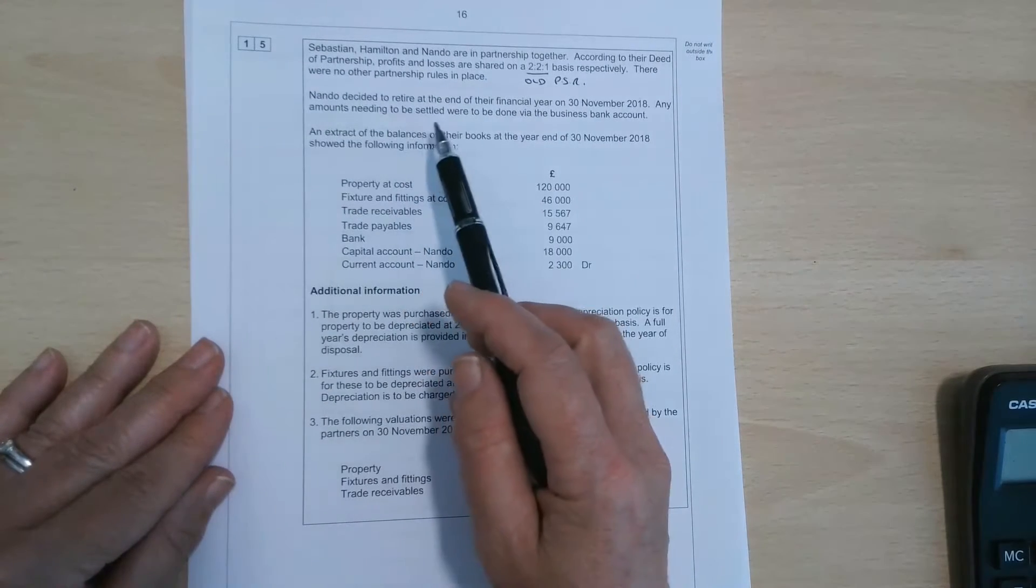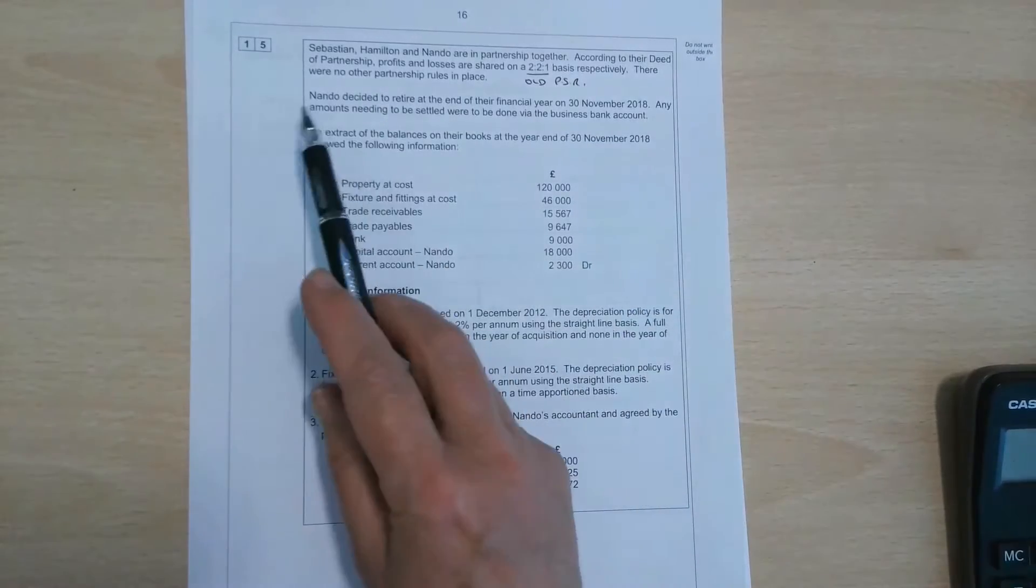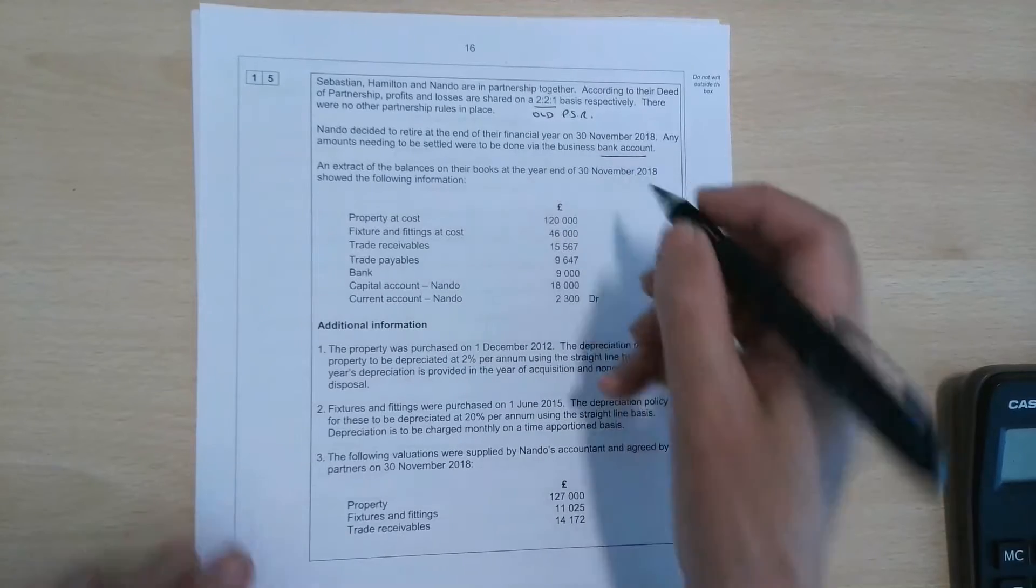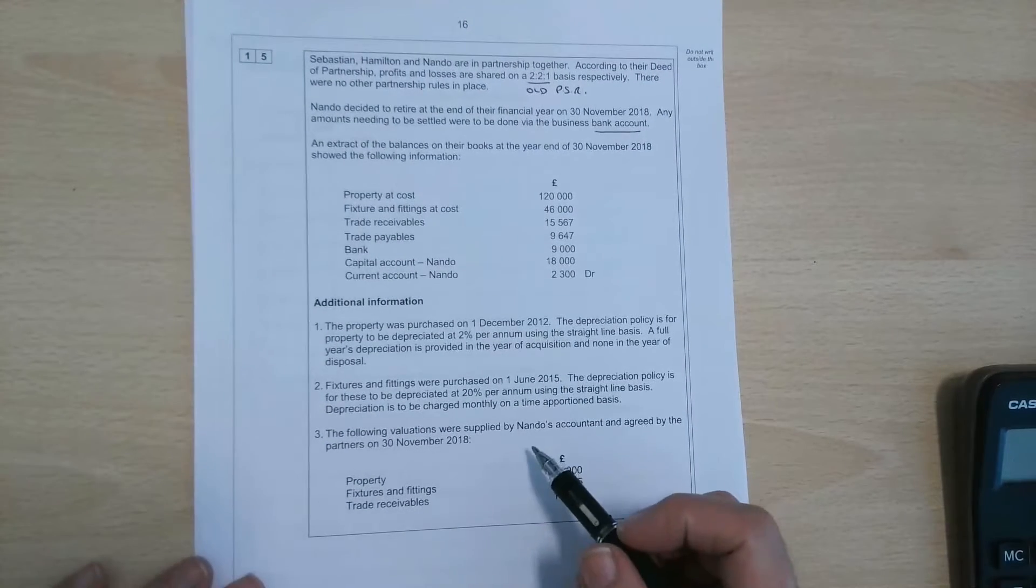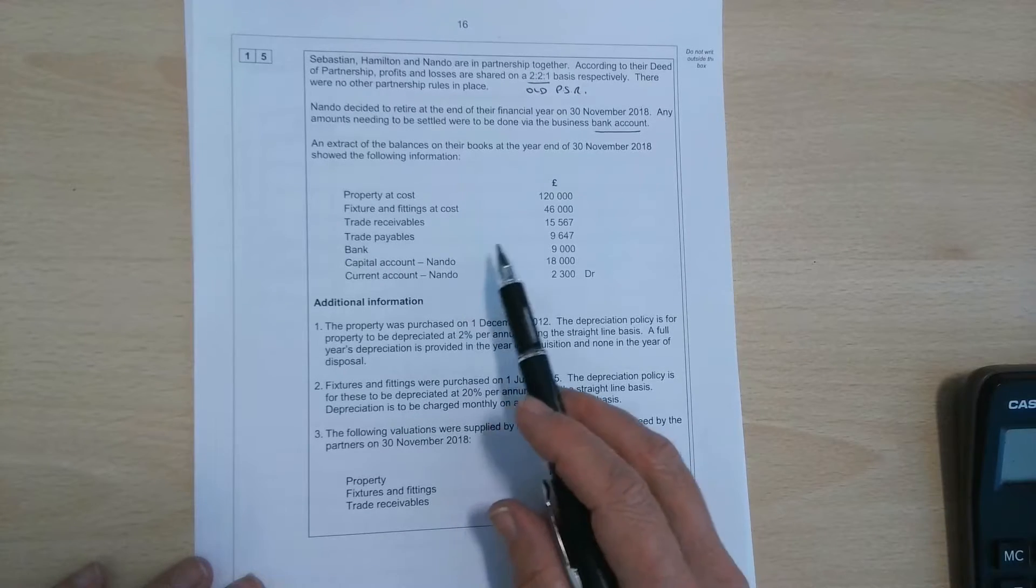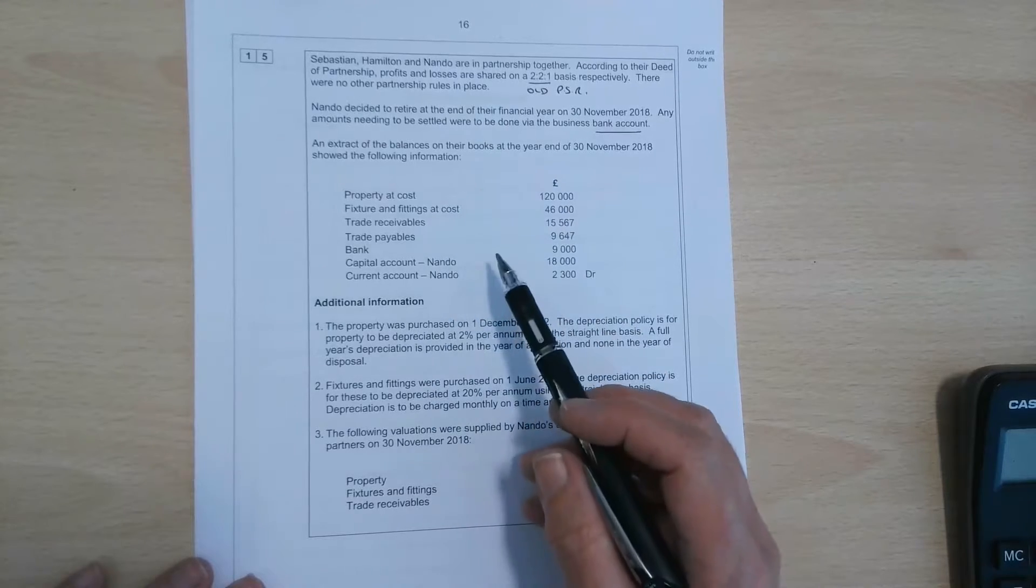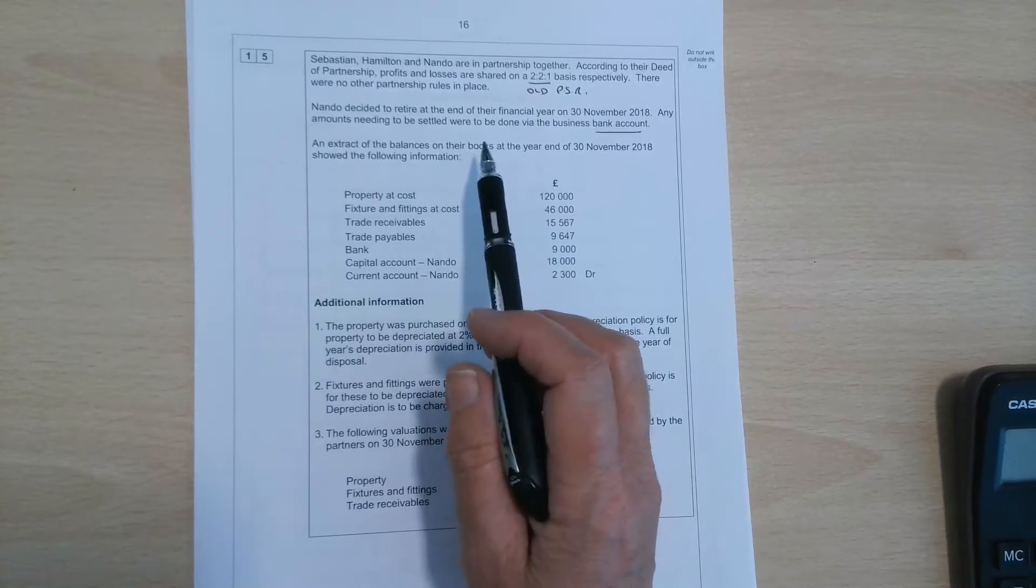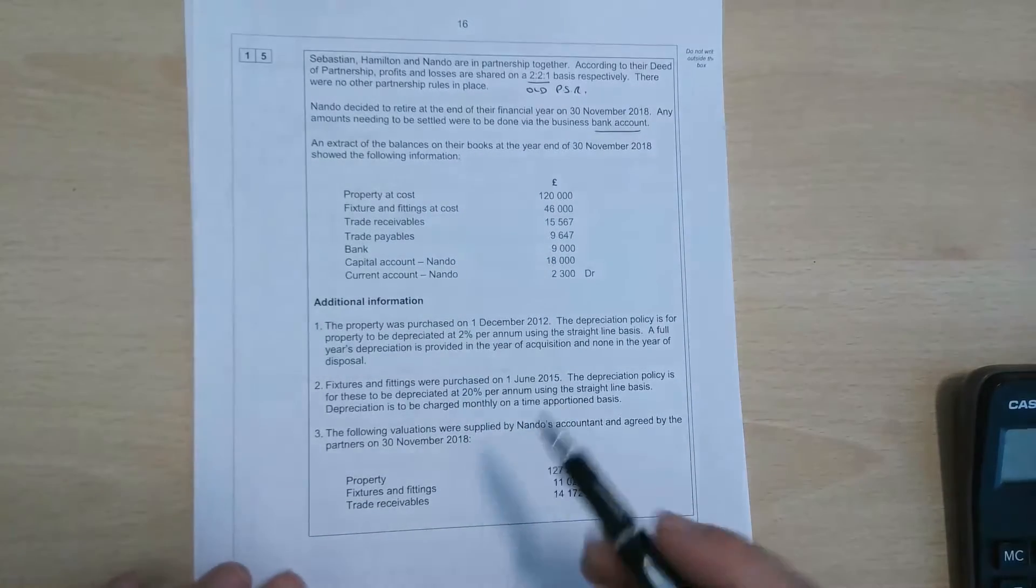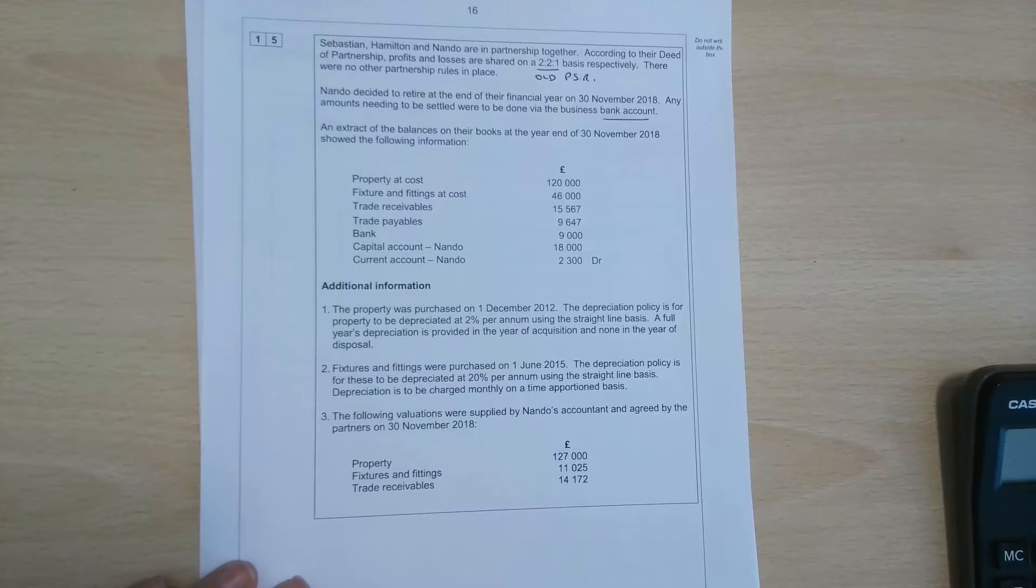So Nando's decided to retire at the end of the financial year on the 30th of November 2018. Any amounts needing to be settled were to be done via the business bank account. So that means if the partnership owes him money at the end, they need to do a transfer, so they credit the bank, debit Nando's capital account. Or if he were to owe them money, we would be debiting the bank and crediting his capital account. A reminder there that if a partner retires, we need to remove all traces of them from the accounts. So that means writing off their current account and their capital account balance at the end.